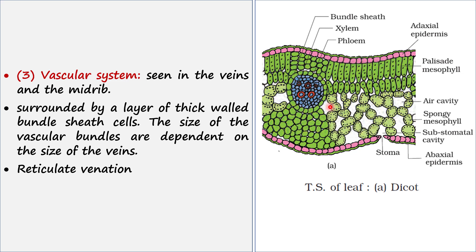The size of vascular bundles depends on the size of the veins. When the veins are wide, the vascular bundles are also bigger; when the veins are narrow, the vascular bundles are also smaller. So the size of vascular bundles is dissimilar throughout the leaf. Dicot leaves have reticulate venation, meaning the veins are arranged in a network-like fashion.